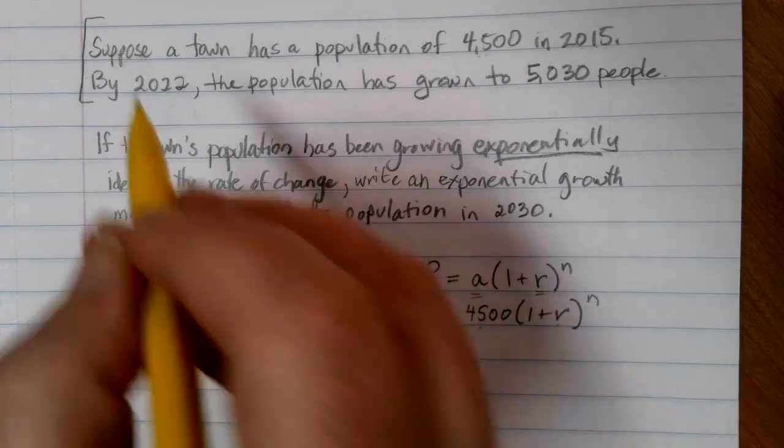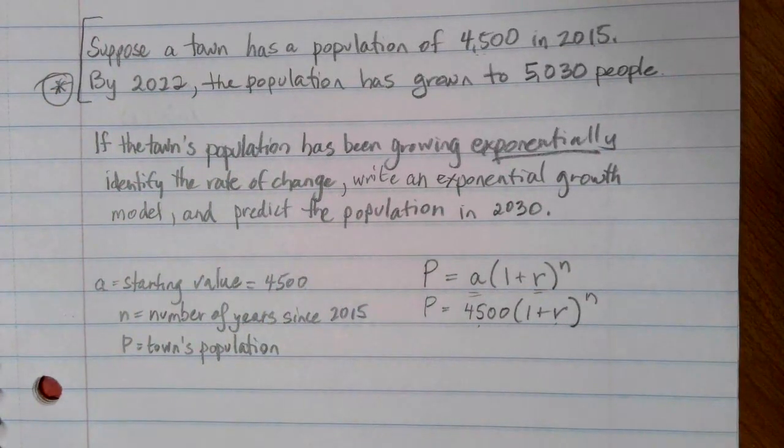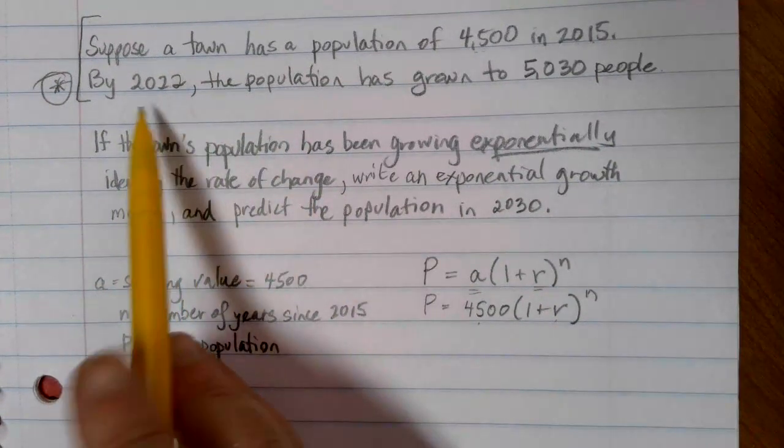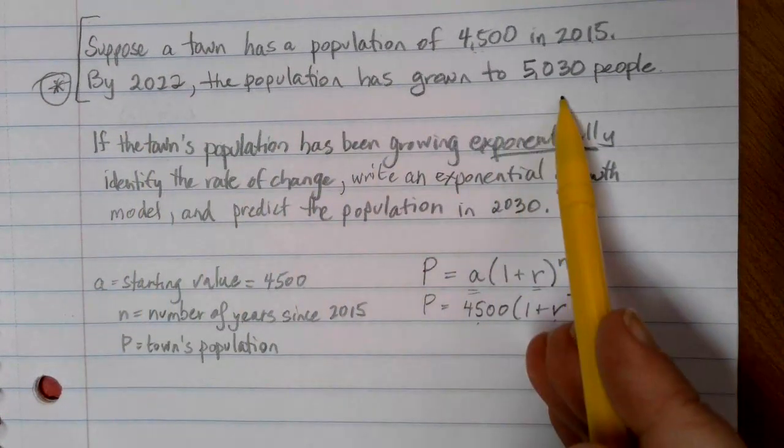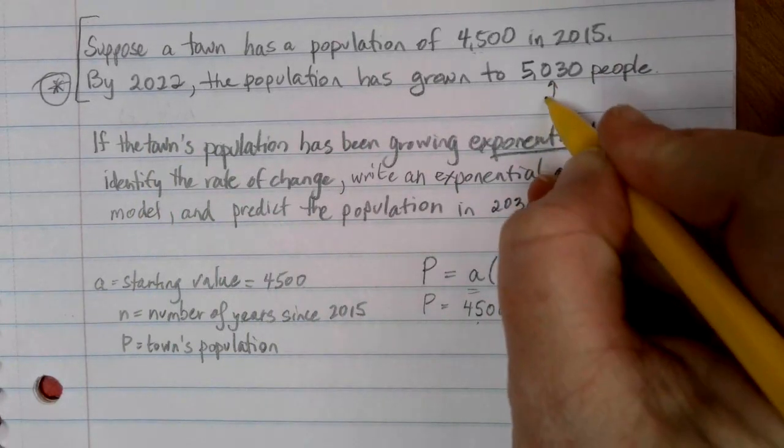How do we solve for it? Well, we have to be given some second piece of information that we know and that we can use that will work in this formula. I know that my formula should tell me that in 2022, the population should be 5,030 people. So this 5,030 is going to be my P value.